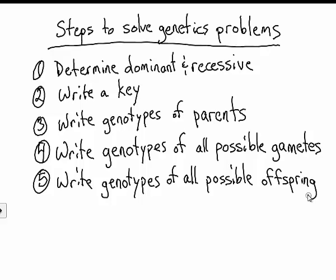If we look at our steps to solve genetics problems, the first step is to determine dominant and recessive. We already have that. We learned that from crosses that have been done before. And step two, we've already written a key. So the next step would be to write the genotypes of the parents.